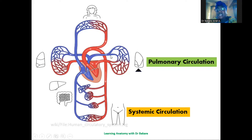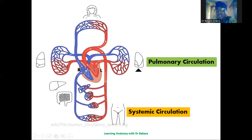The heart is divided into two compartments: the right compartment and the left compartment. On the right side of the heart, we have deoxygenated blood, and that is why this is highlighted in blue. On the left side, we have oxygenated blood, which is ready to be transported to feed the body cells with oxygen and nutrients — that is why this is highlighted in red.